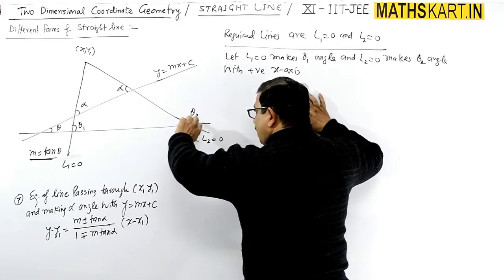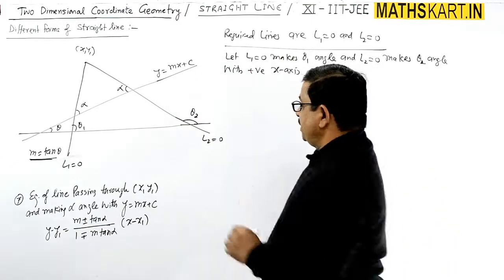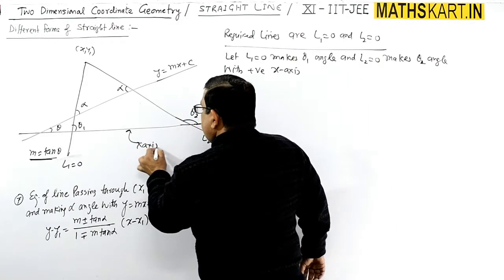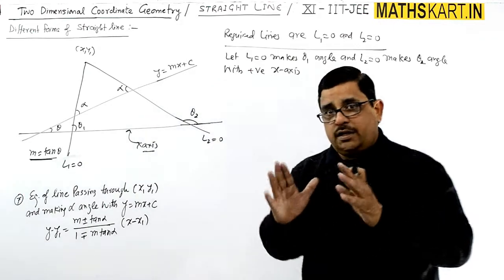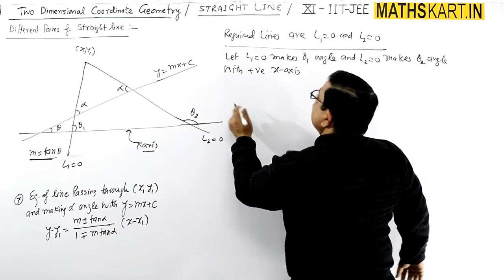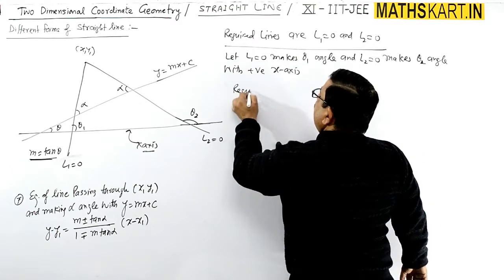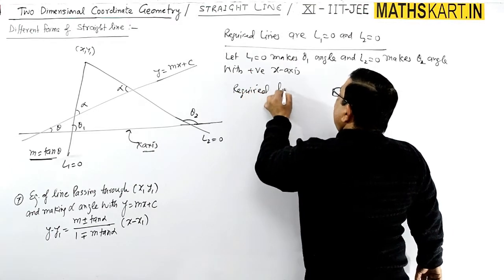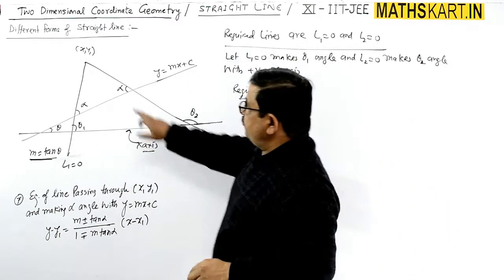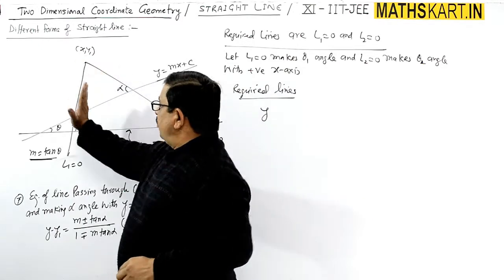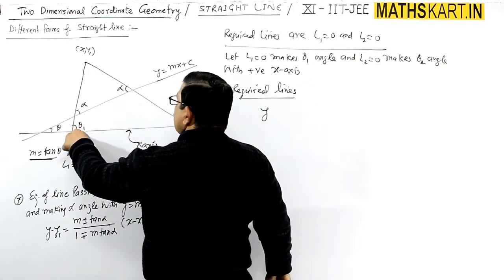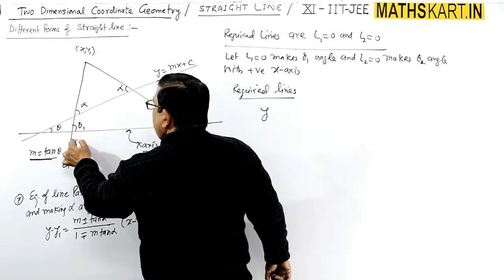We are considering the angle with the x-axis. We can write the required lines in point-slope form, since both pass through (x1, y1). The slope of the first line is M1 and the slope of the second line is M2.